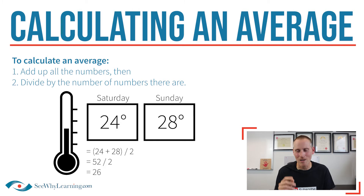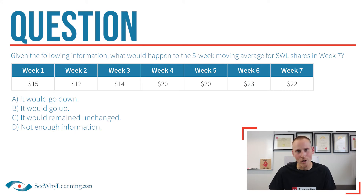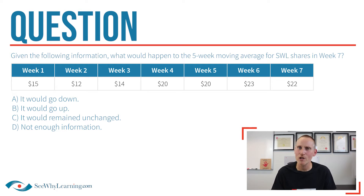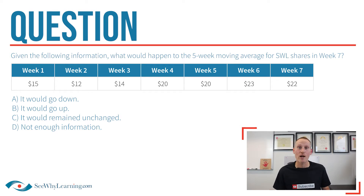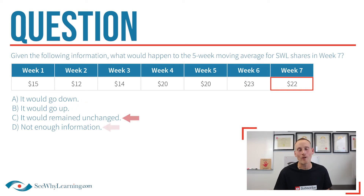With that out of the way, let me go ahead and actually pull the question up that the student was asking about. What I want you to do quickly is take a look at the numbers and try to answer the question in your head before we really sink our teeth into it. So what do you think will happen to the moving average price in week seven? Will it go down? Will it go up? Will it stay the same? Or do you think we need more information in order to come up with the answer?